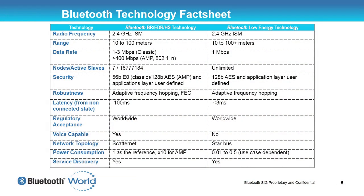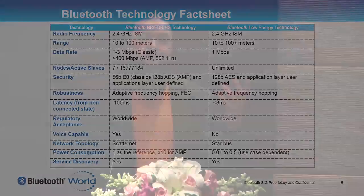In terms of regulatory acceptance, both are available worldwide. They both use the 2.4 GHz ISM band and comply with regulatory requirements globally. Bluetooth Basic Rate is voice capable — you can do conversational audio and high-quality stereo music. For example, in the hotel room the previous night, the speaker selected music on their phone and played it through speakers, allowing them to walk around the room without earbuds while still listening to high-quality music.